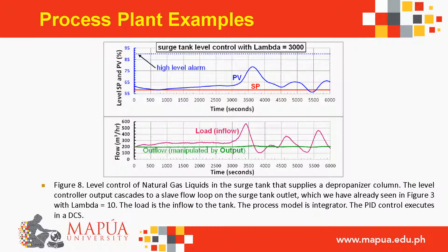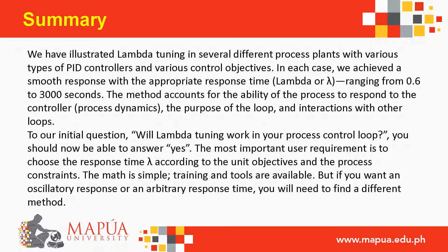Level control of natural gas liquids in the surge tank supplying a depropanizer column: the level controller output cascades to a slave flow loop on the surge tank outlet with lambda = 10. The load is the inflow to the tank. The process model is integrator; the PID control executes in a DCS.